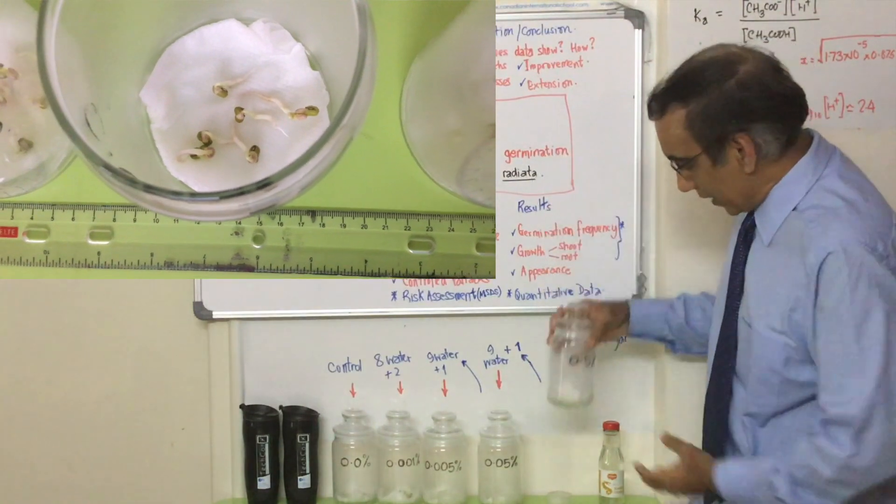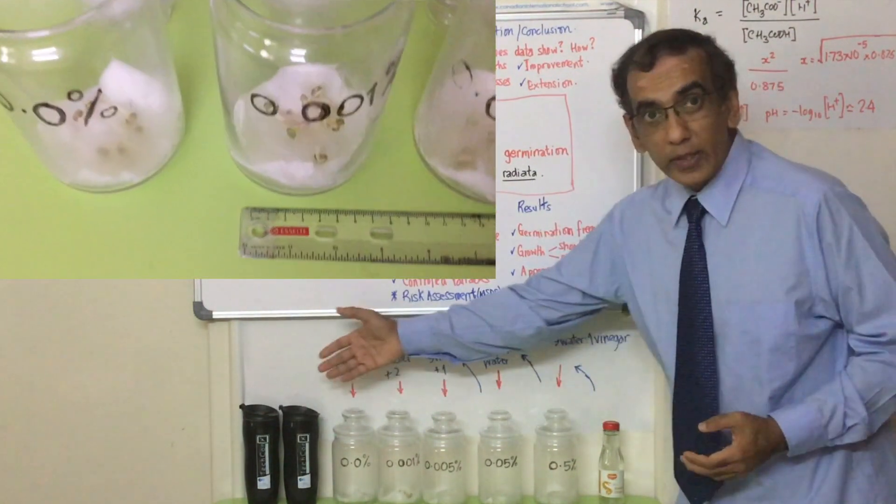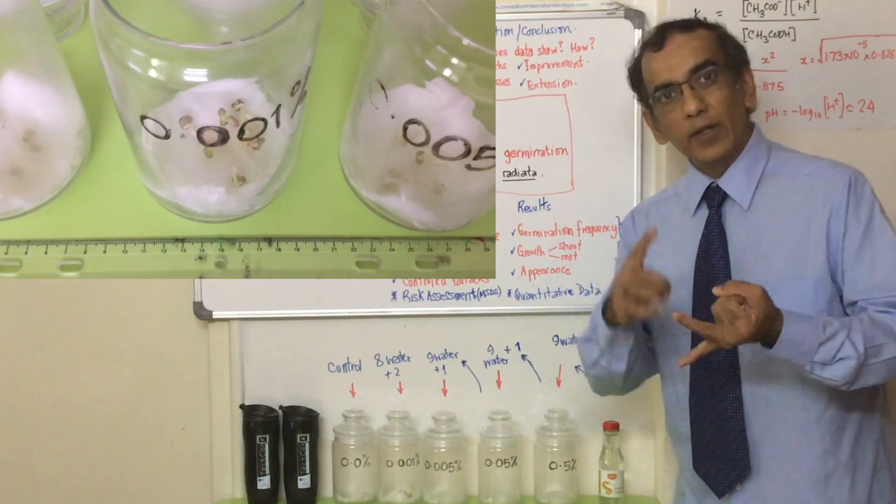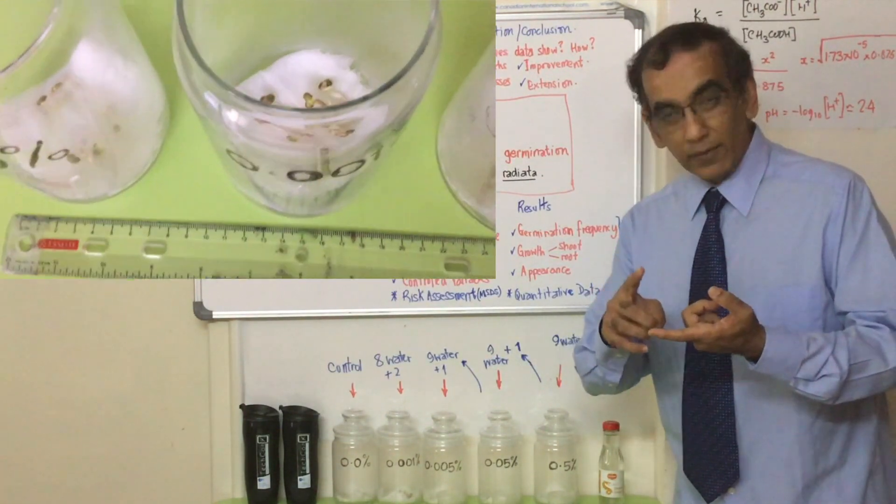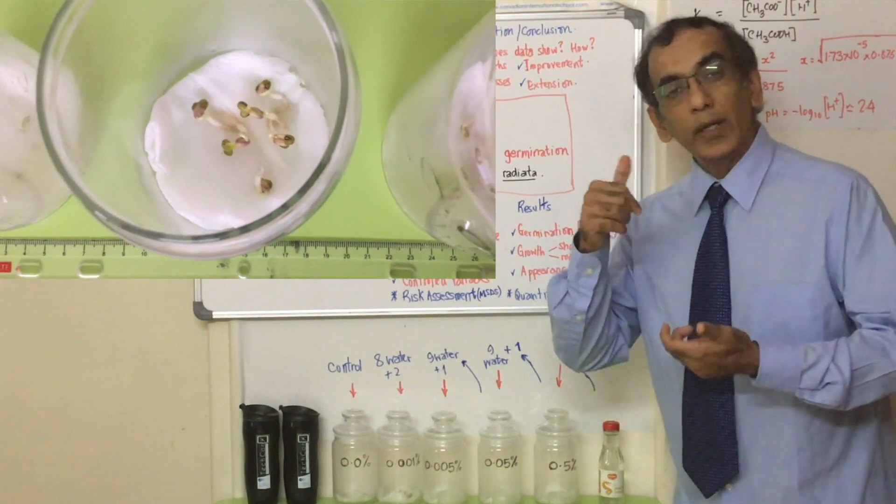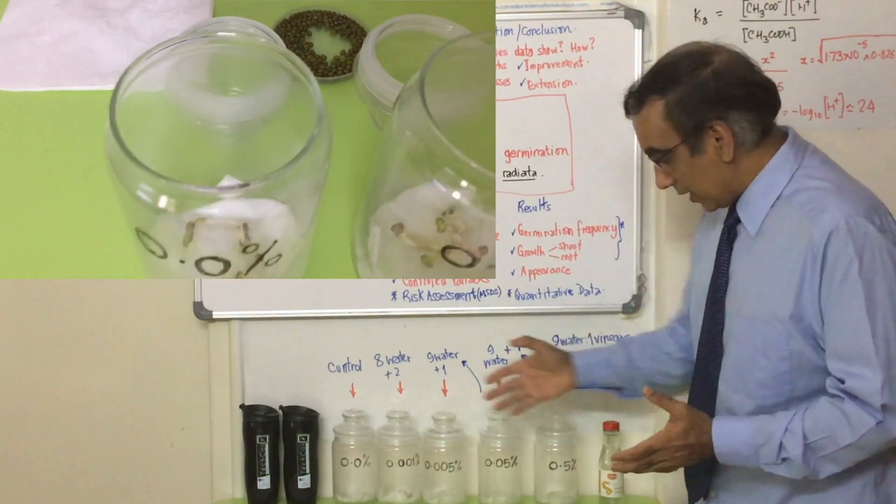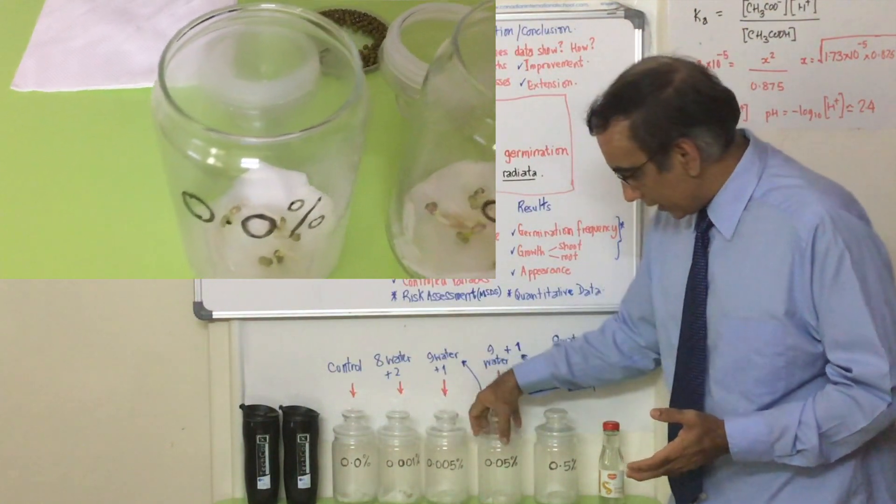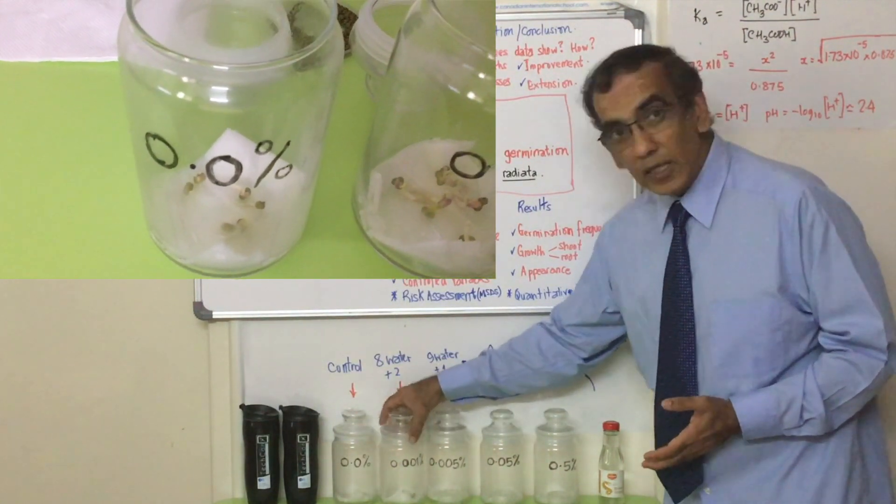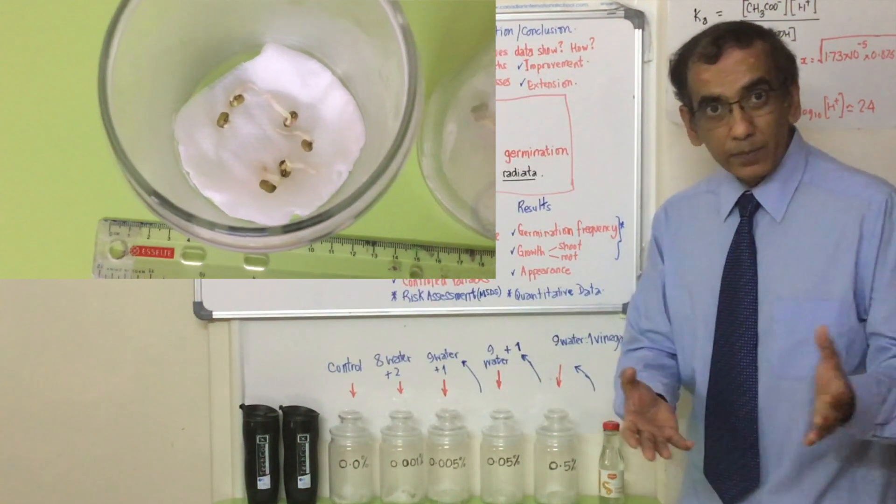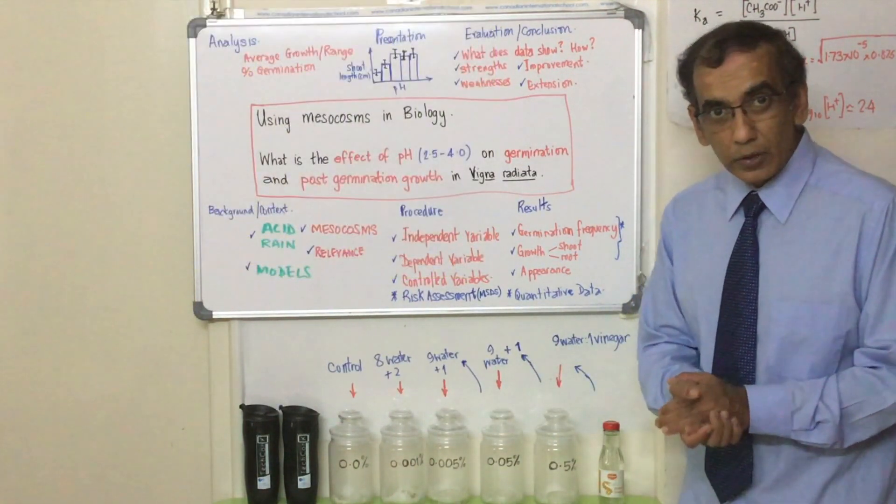But if you decide to open your containers, which you're going to have to do to check in with them after 48 hours, then another 48, then another period of 72, followed by another period of 72, like I said in the last video. Then over those 10 days, you're going to have to open these lids from time to time to take photos and possibly to measure the length of the young root and the young shoot.